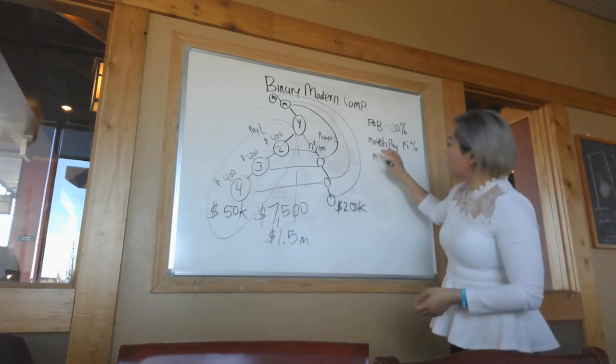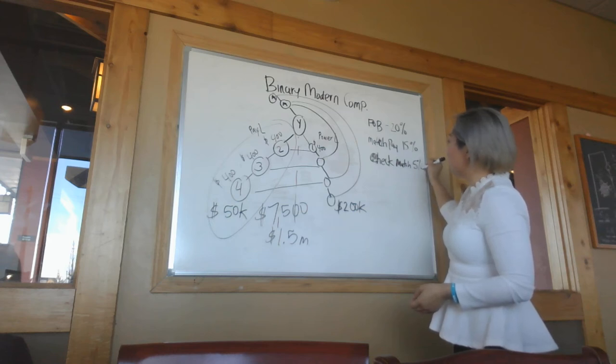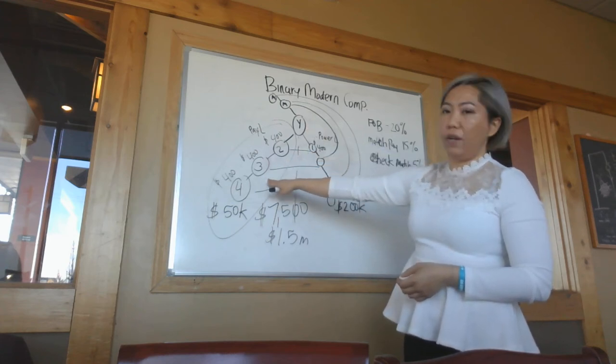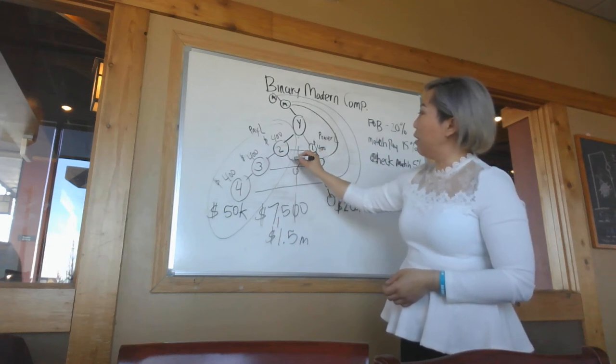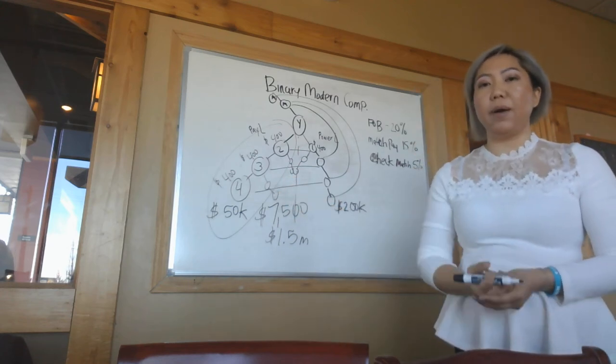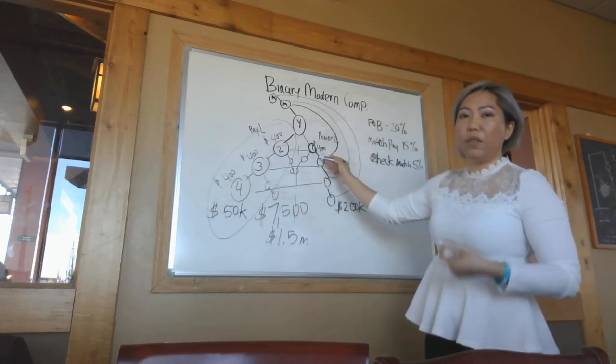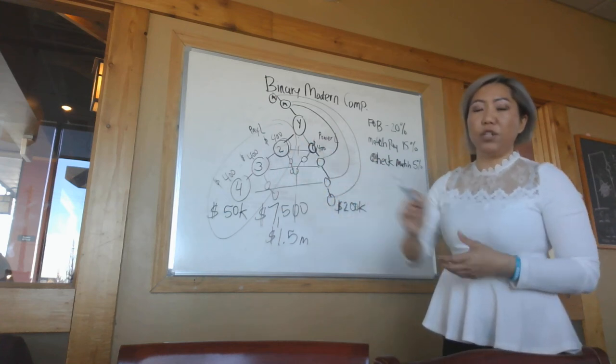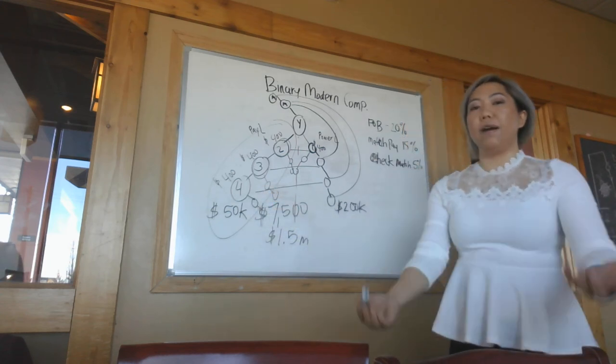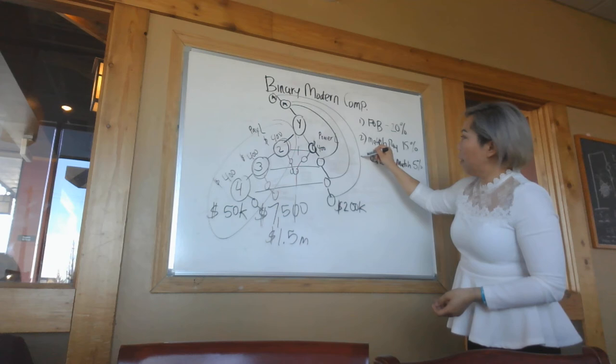The other way is we call it check match. So this is 5%. Check match means that if you right here sponsor one, two, and three people, and they start to also sponsor people because they're going to know friends and family who want to take care of their health, maybe they're struggling financially, they also want to help people get better so they can make money. If person one makes money that cycle, you're going to get 5% of what their income is. You're going to get 5% of number two, whatever their income is for that cycle. Same thing. And so if number four starts to sponsor people, you're also going to get 5%. So this is our top three ways of getting paid.